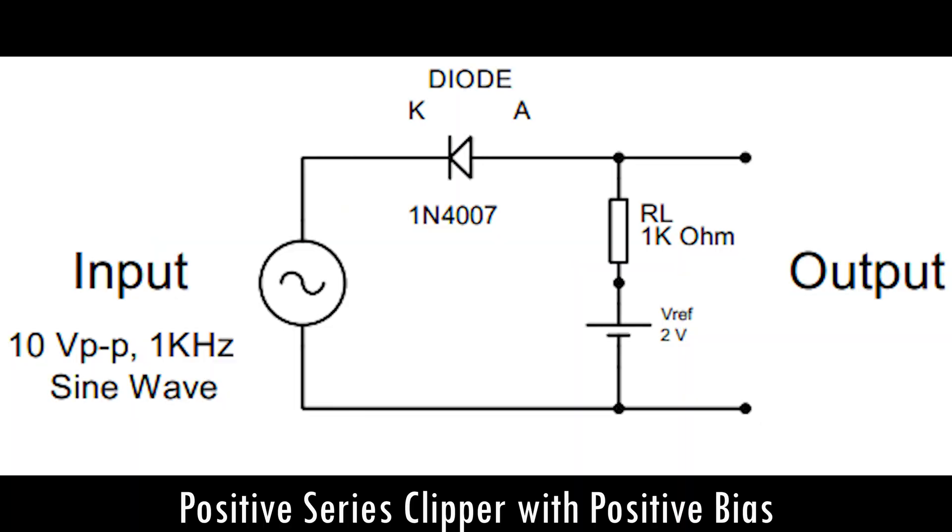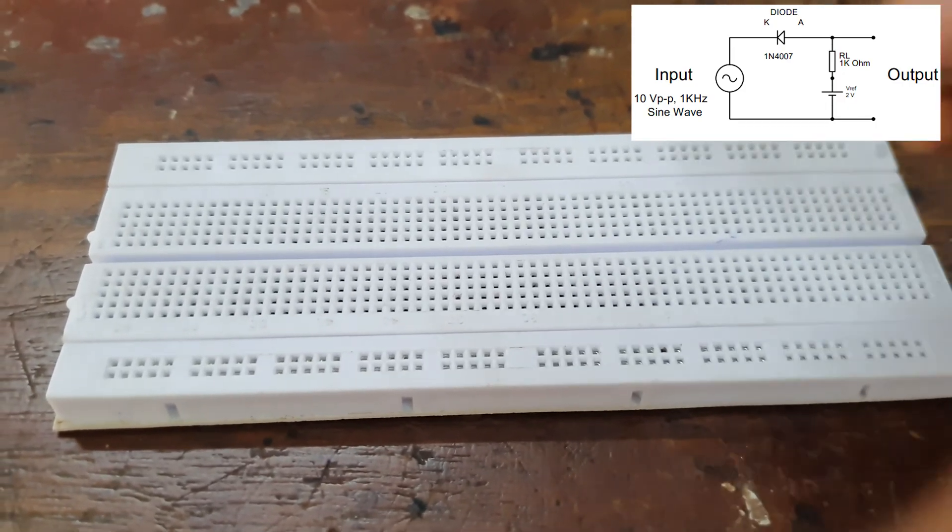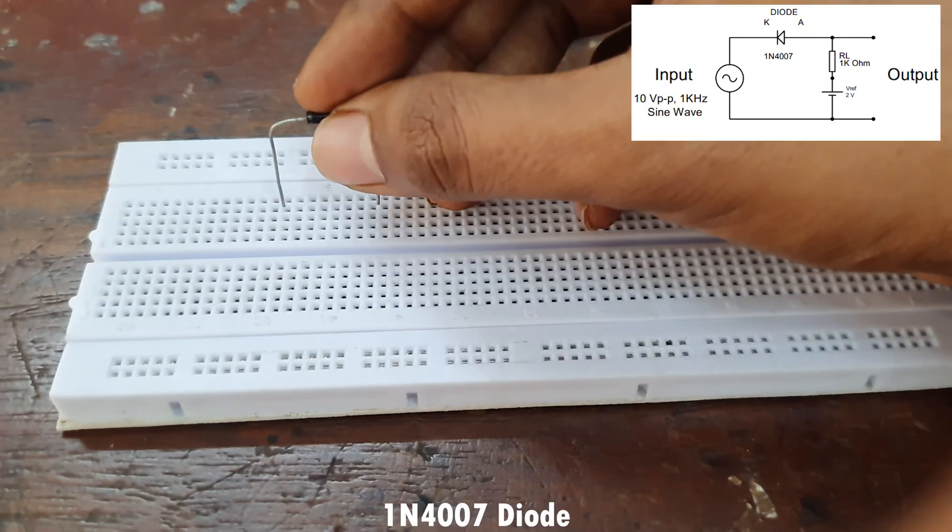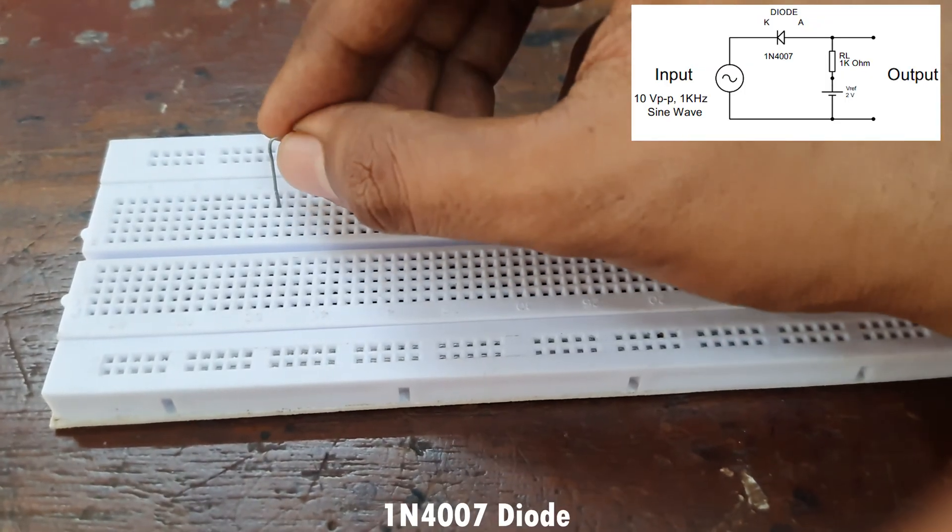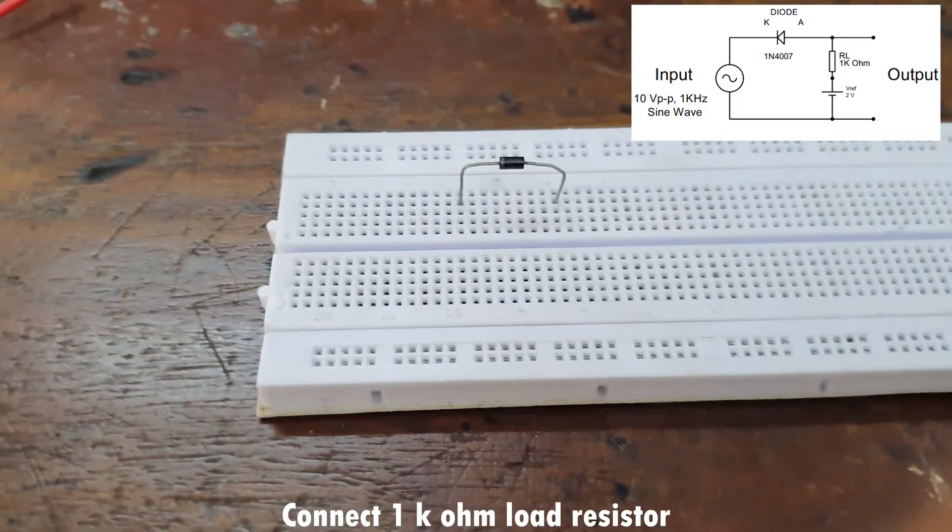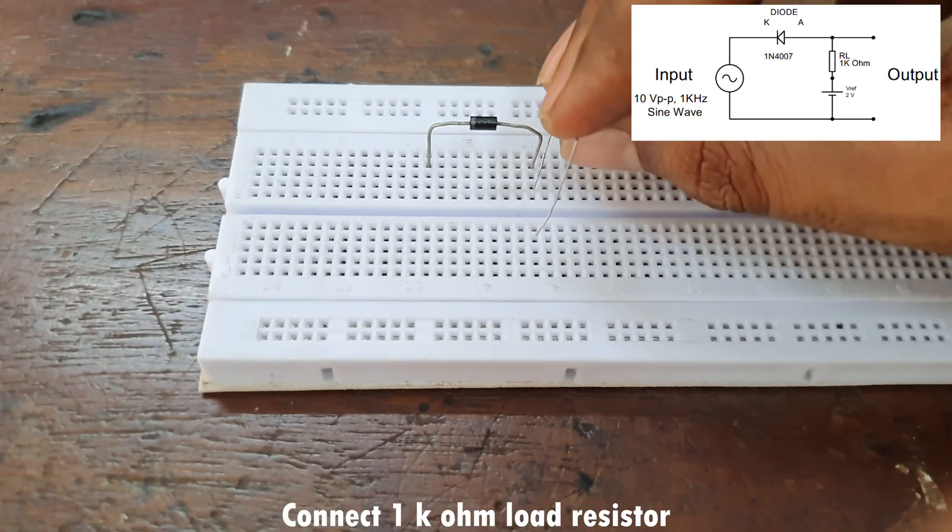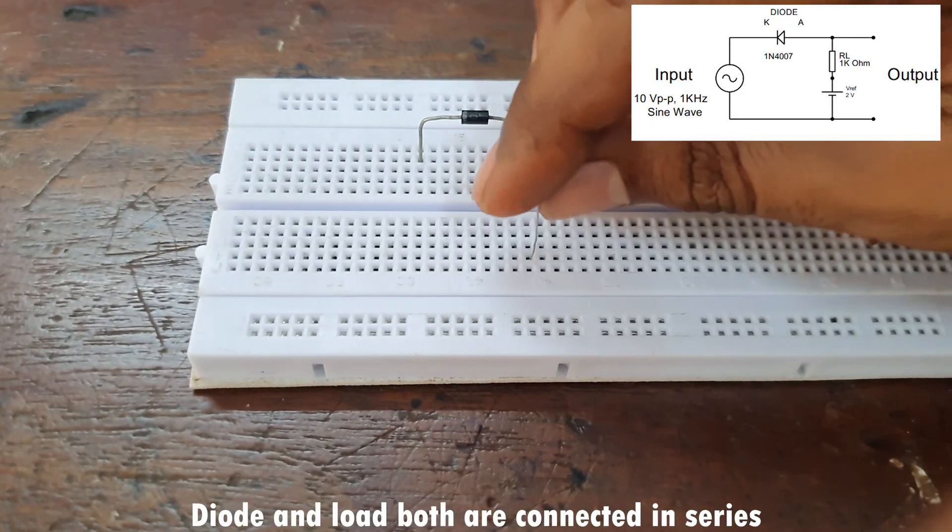This is a positive series clipper with positive bias. We are using one 1N4007 diode and a one kilohm load resistor both connected in series. That's why the name series clipper - the diode and load resistor are both connected in series, along with a positive bias voltage.